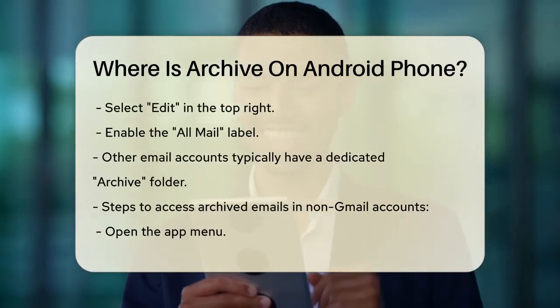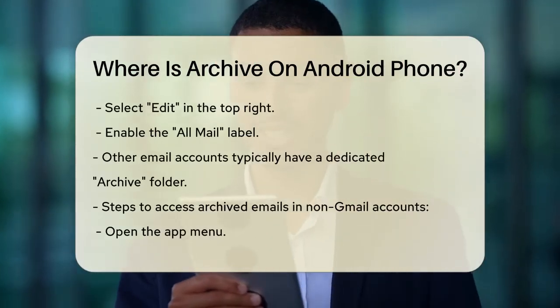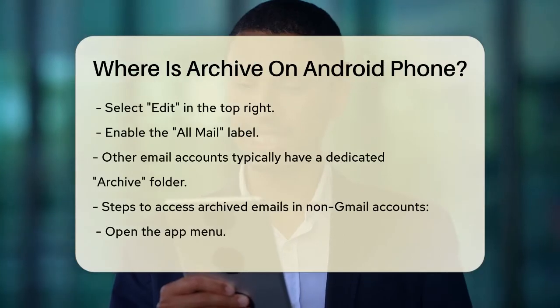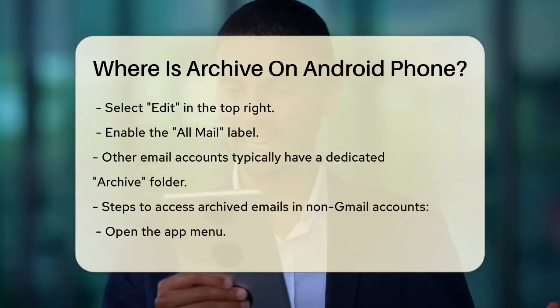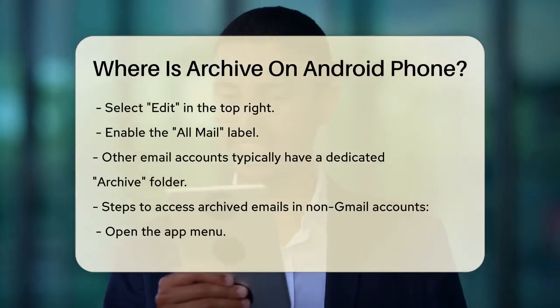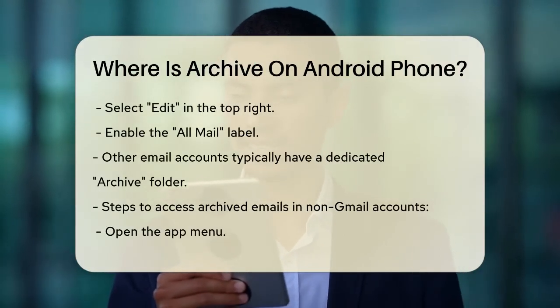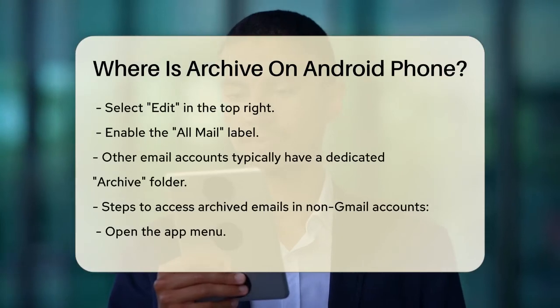From there, select Edit at the top right, and then enable the All Mail label. Once you've done this, you'll be able to see all your archived emails in this section.